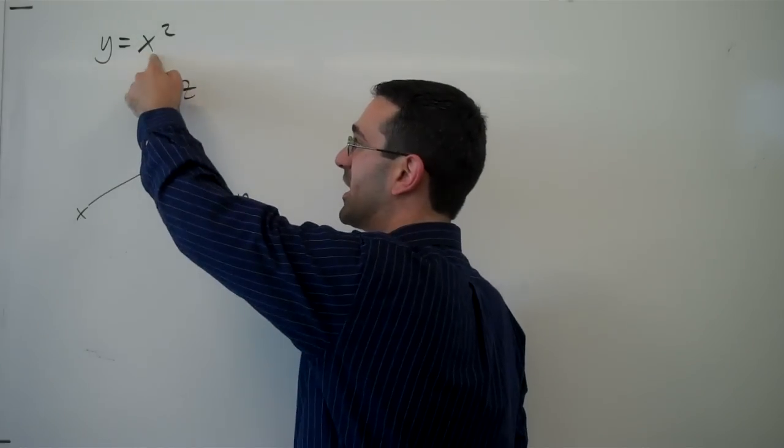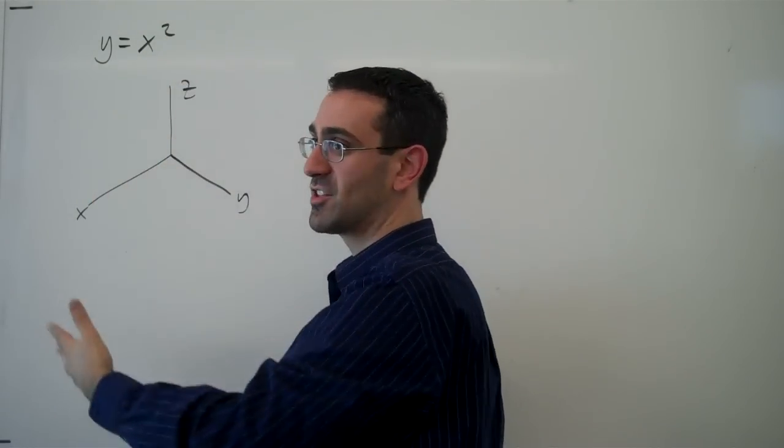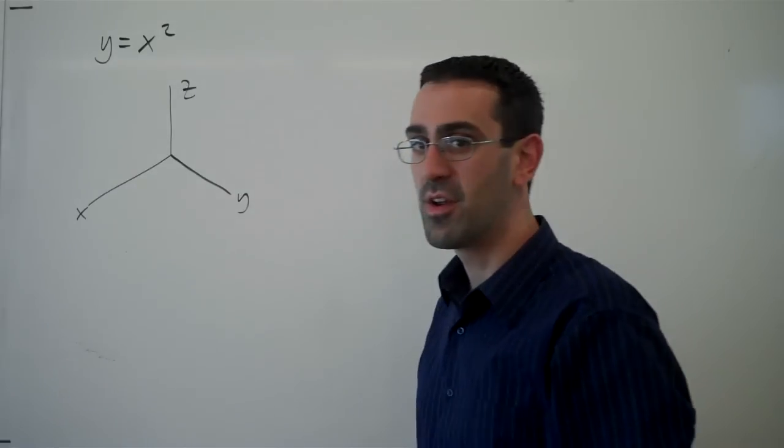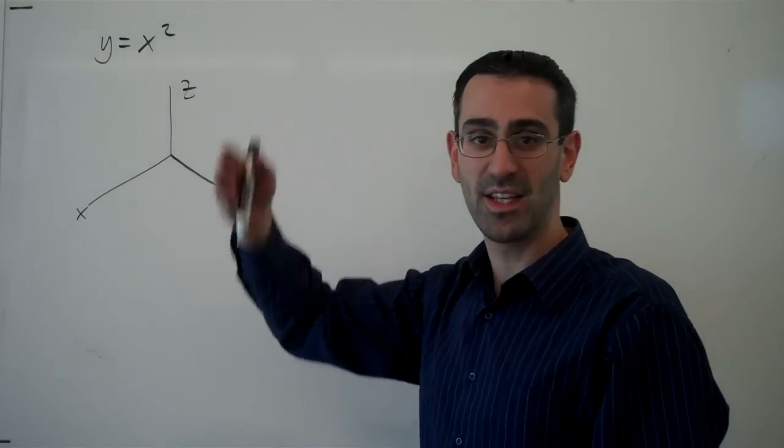So here, when x is, let's say, 2, we know that y is 4, but z can still be anything it wants to be.